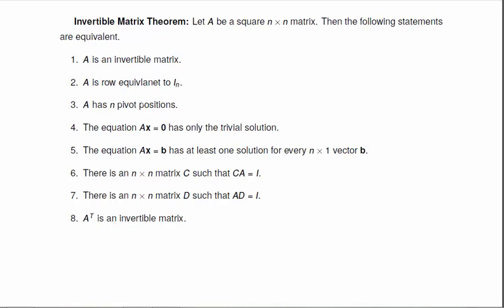Six, there's an n by n matrix C, such that CA is equal to the identity. And seven, an n by n matrix D, such that AD is equal to the identity.